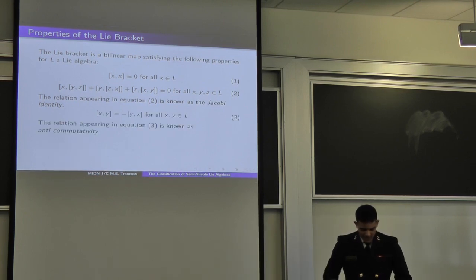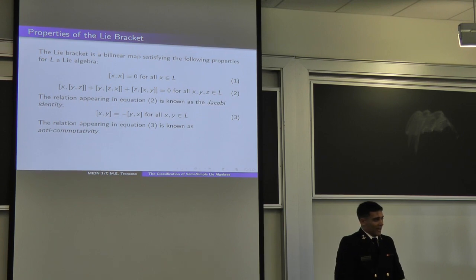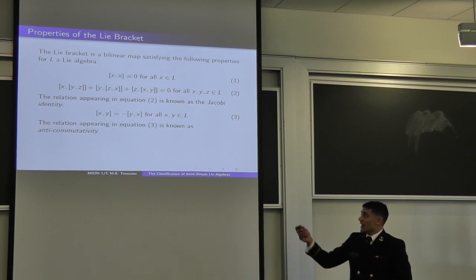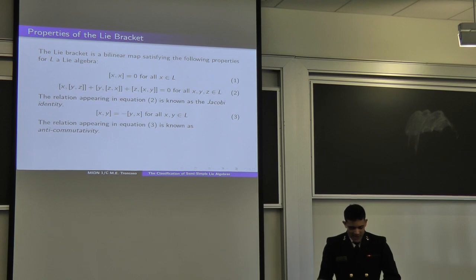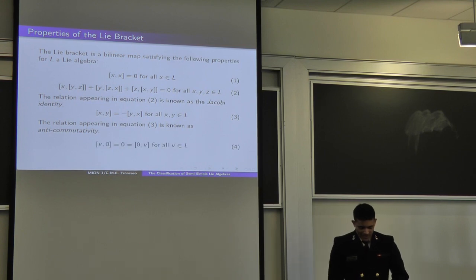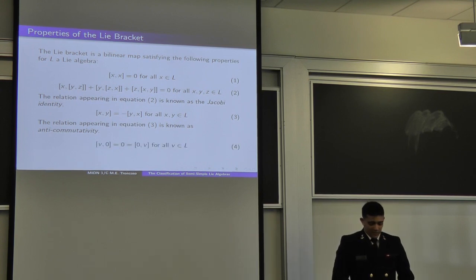From here we can get another relationship called anti-commutativity, which means [X, Y] is equal to negative [Y, X], and anything bracketed with zero is zero.